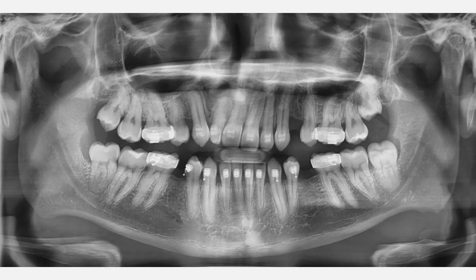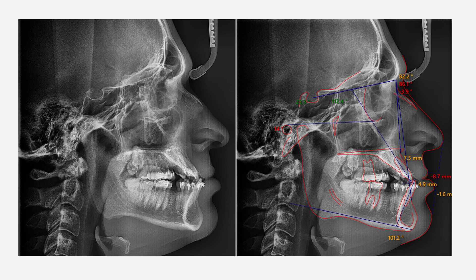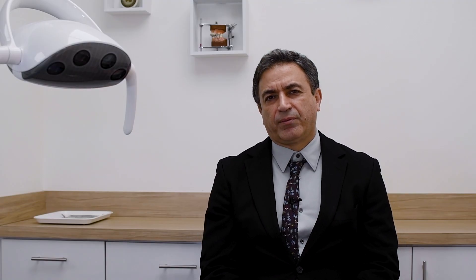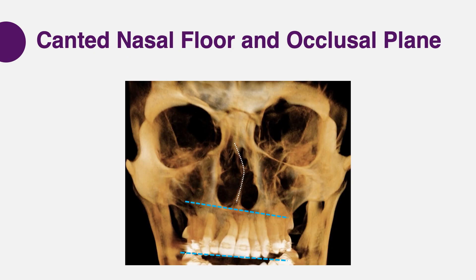On the panorex, we noticed some small areas of root resorption. The cephalometric analysis confirmed a skeletal Class 3 pattern. When we took a CBCT, we found very interesting findings: severe nasal septal deviation, a large polyp in the nasal cavity, and a canted nasal floor. The patient was complaining he could not breathe through the nasal cavity and had mostly adopted mouth breathing, which could explain some of the etiology of the malocclusion. Additionally, the patient was not comfortable with his TMJ and had severe clicking. All of this required orthopedic and orthodontic intervention.